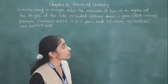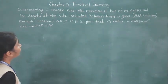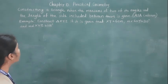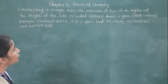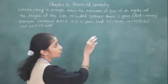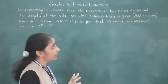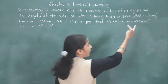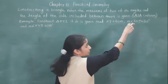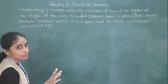Good morning students. Let's learn today. Constructing a triangle when the measures of two of its angles and the length of the side included between them is given — means two angles and the included side between those angles are given. So which criteria? ASA criteria. Two angles and included side — the side which is between them, that is included side is given. Then we have to construct the triangle.